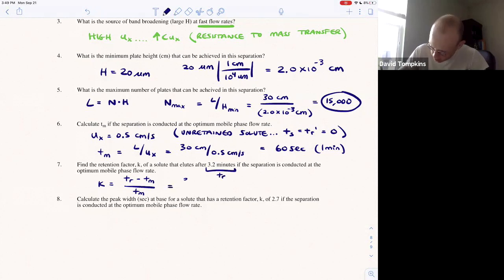And a solute spends 3.2 minutes in the separation, and that's the total time in the column. So it's 3.2 minutes minus 1 minute, all over 1 minute, or the ratio of time spent in the stationary phase